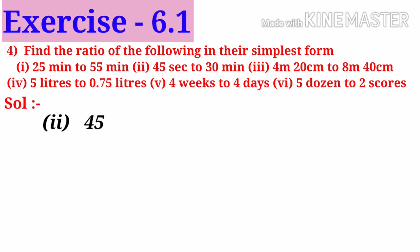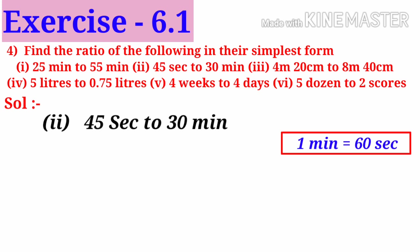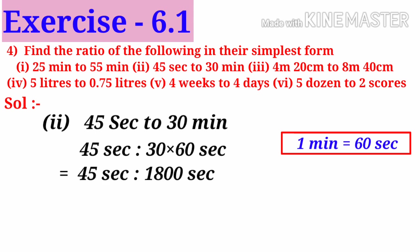Number 2: 45 seconds to 30 minutes. Observe that seconds and minutes are different quantities. To find the ratio we have to convert into same quantities. Let us convert minutes into seconds. 1 minute is 60 seconds. So 30 minutes equals 30 into 60 seconds, which is 1800 seconds. So 45 seconds to 1800 seconds. On simplification by 9, we get 5 to 200. Now on simplification by 5, we get 1 to 40. The ratio is 1 is to 40.